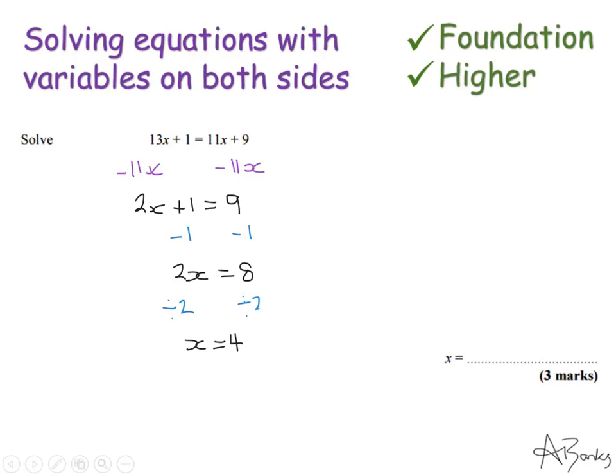Now I can just double check this works because if x is 4 then 13 times 4 plus 1 should be the same as 11 times 4 add 9. I'm just substituting this answer of x is 4 back into my equation at the top. So 13 times 4, well that's 52, add 1.